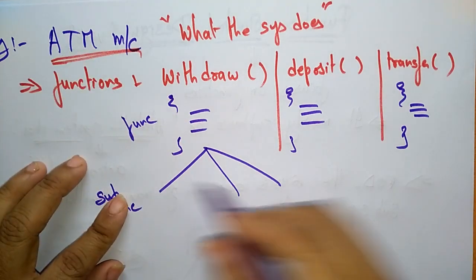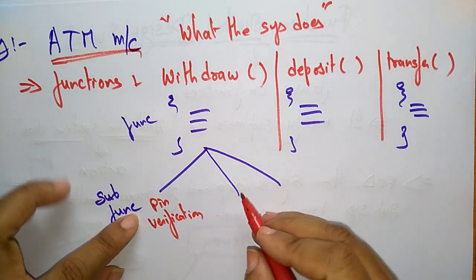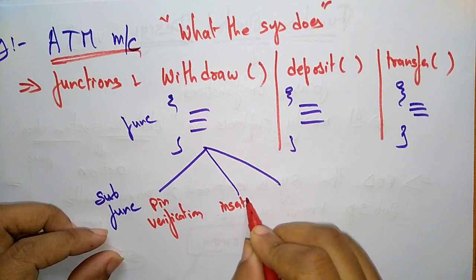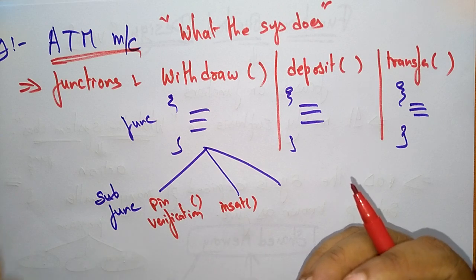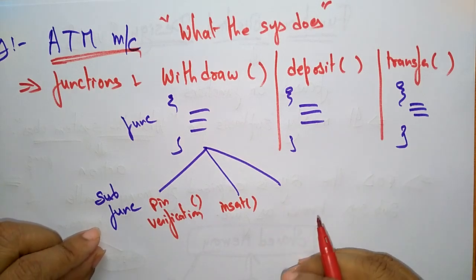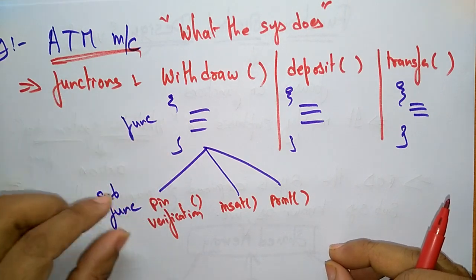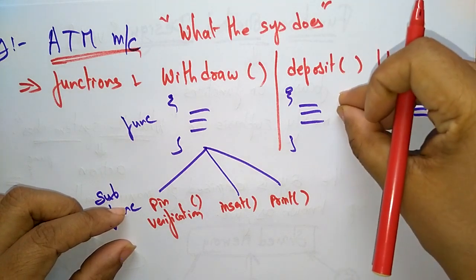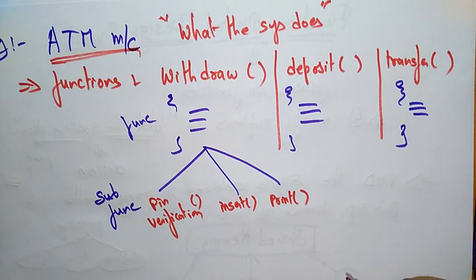To withdraw money, a pin verification has to be done first — that is one sub function. After pin verification, we have to enter the amount to be withdrawn — that is the insert function. Then we enter the pin number and the amount, and finally it has to print the copy. These are all the sub functions present in the main function 'withdraw'. Similarly, for deposit and transfer, there are also sub functions like pin verification, amount, and print.